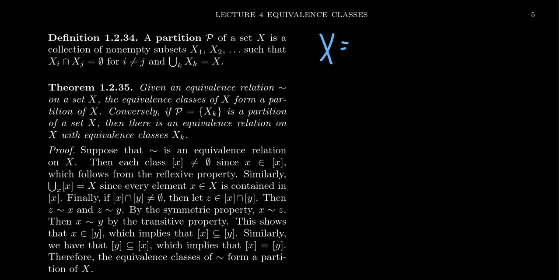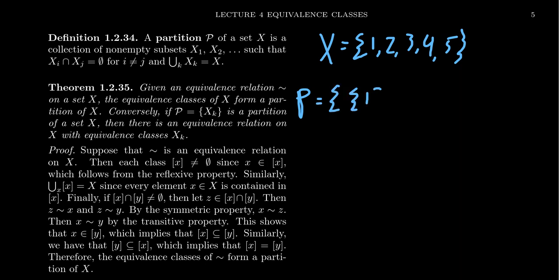A quick example of that would be something like the following. Take X to be the set {1, 2, 3, 4, 5} — just something very, very simple here. And then as a partition, we could take the following: we're going to have the first set contain just 1, the second set will contain 2 and 3, and then the last set will contain 4 and 5. Just a very simple example, but this is an example of a partition.